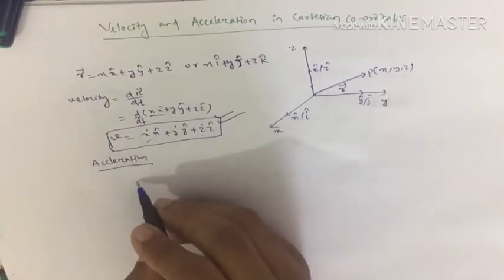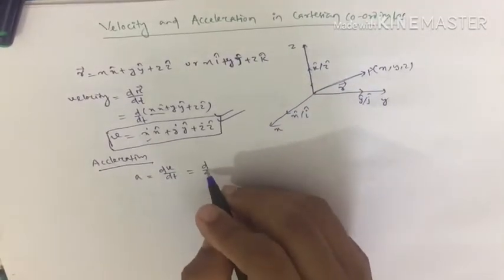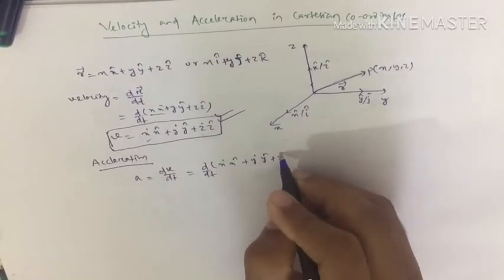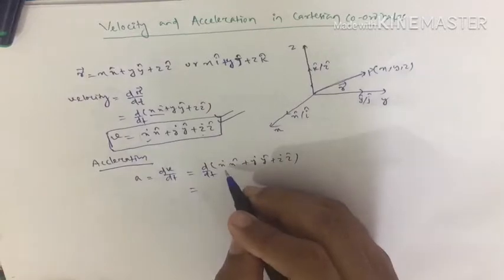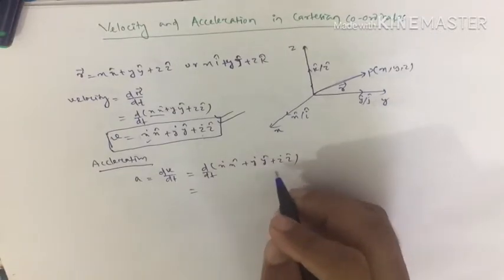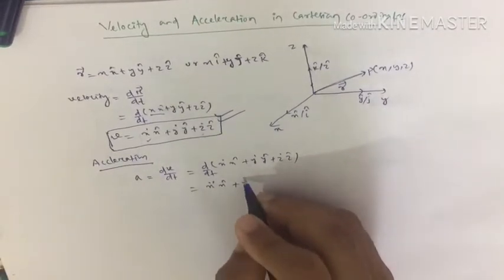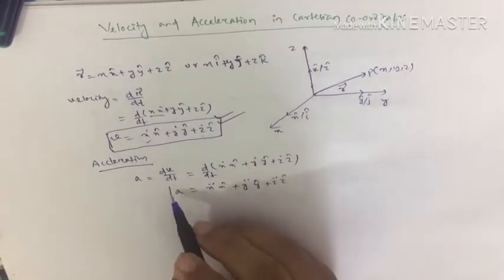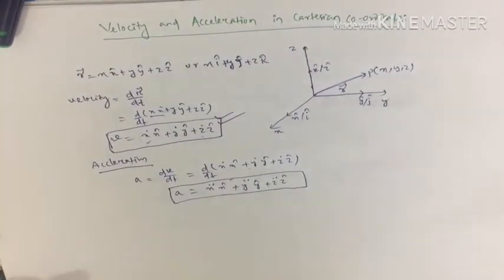Acceleration is the time derivative of velocity. So taking the time derivative of velocity — which is ẋ·x-cap plus ẏ·y-cap plus ż·z-cap — you take the derivative of each term with respect to t, and you get ẍ·x-cap plus ÿ·y-cap plus z̈·z-cap, which is the acceleration in Cartesian coordinates.